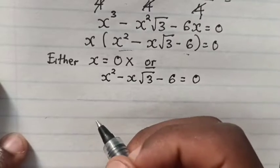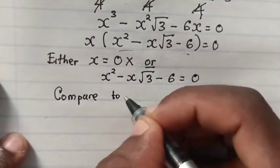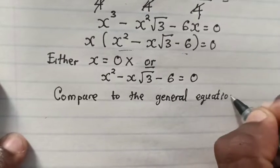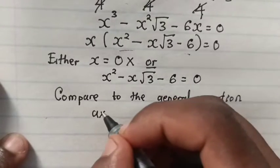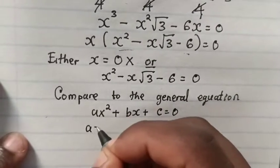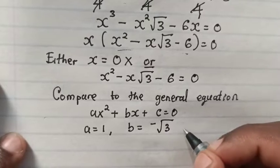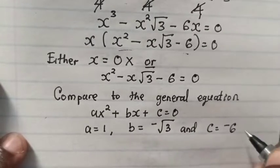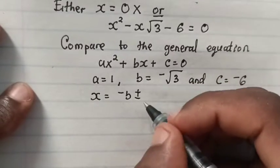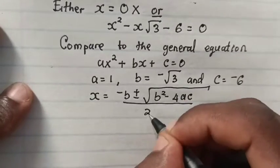From this equation we compare with the general quadratic equation, where the general equation is ax² plus bx plus c is equal to 0. So a will be 1, b will be negative √3, and c will be minus 6. So we substitute into the quadratic formula: x equals minus b plus or minus √(b² minus 4ac) all divided by 2a.